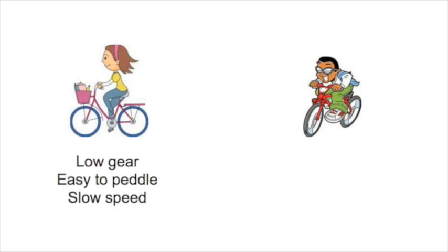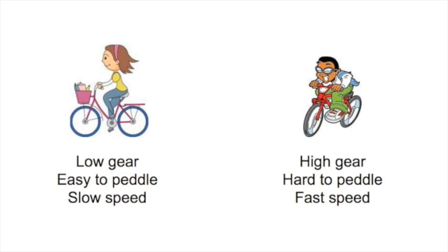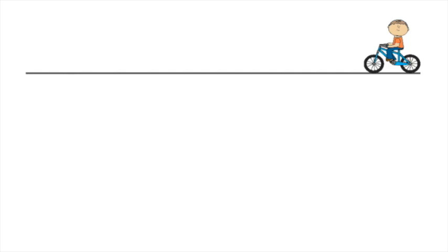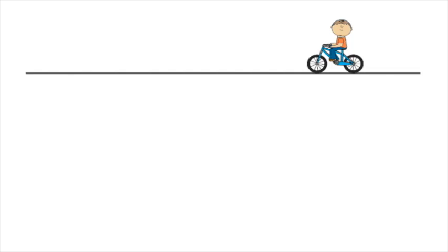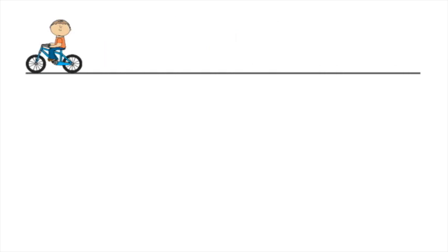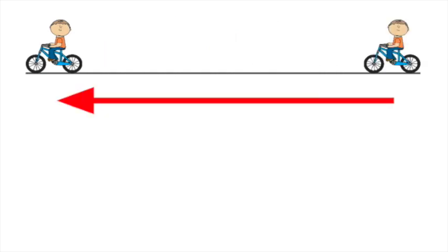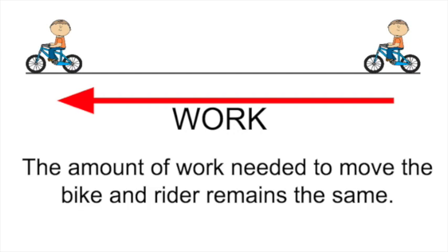Let's start by thinking about riding a bike with multiple speeds. In one of the low gears the bike is really easy to pedal but you can't go very fast. In one of the high gears the bike is much harder to pedal but you can go much faster. It takes a certain amount of energy or work to move our bike from one spot to the other, and it doesn't matter whether someone's pushing you, pulling you, or you're driving in low gear or high gear — the amount of work needed to move the bike and the rider remains the same.